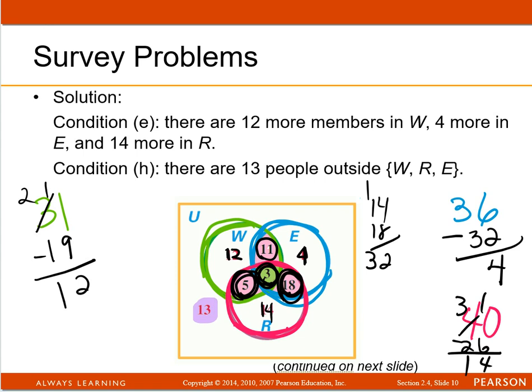13, and then that 13 goes all the way back to the outside of the circles. That was H, that was there was 13 people who liked to watch TV late and on weekends and not reality. And so now you have a number in all eight regions.